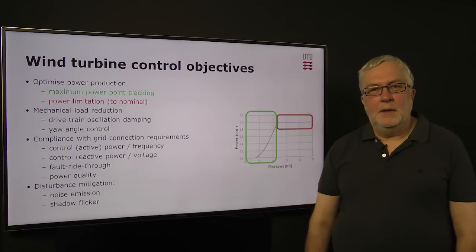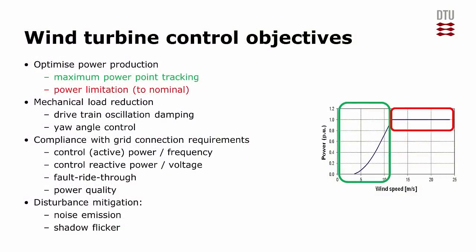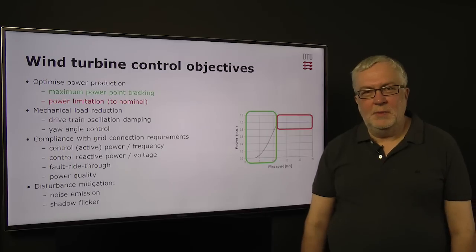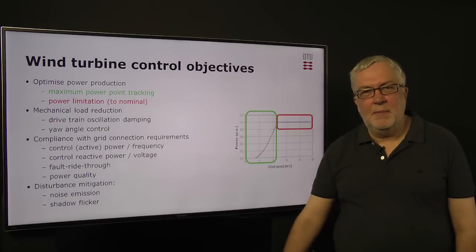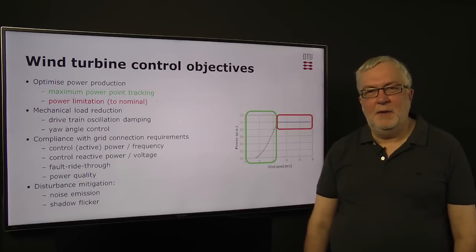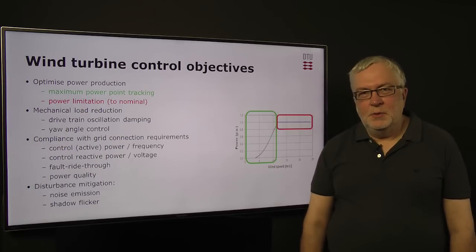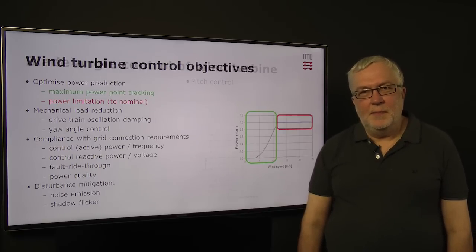And then it's also a control objective to mitigate other disturbances like noise and also possibly shadow flicker when blades are passing the sun. There can be a few periods where it is smart to stop wind turbines.